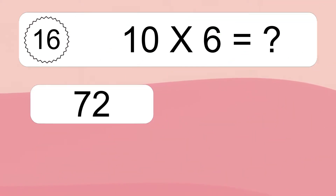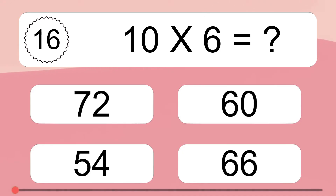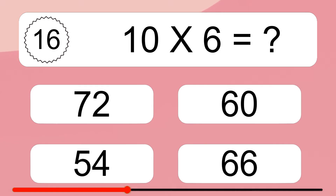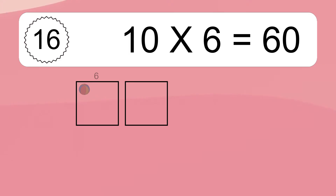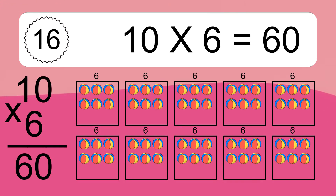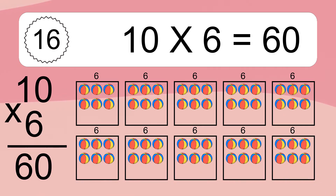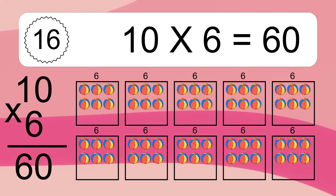10 times 6 equals what? 10 times 6 equals 60. We have 10 boxes, and each box has 6 colorful balls inside. If you count all the balls in all the boxes together, you will have 10 times 6 balls. This equals 60 balls.